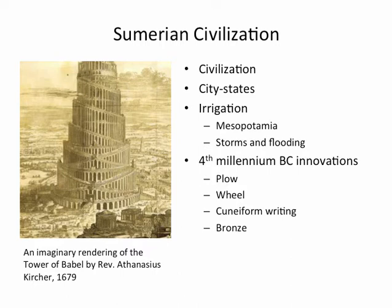The presence of city-states and urbanized, organized people helped give rise to a number of important innovations in human culture that started in Mesopotamia during the 4th millennium BC — that is, the period from 3,000 to 3,999 years before Christ. Among these great inventions were the plow and the wheel, which the Mesopotamians initially used primarily in warfare as part of a chariot.